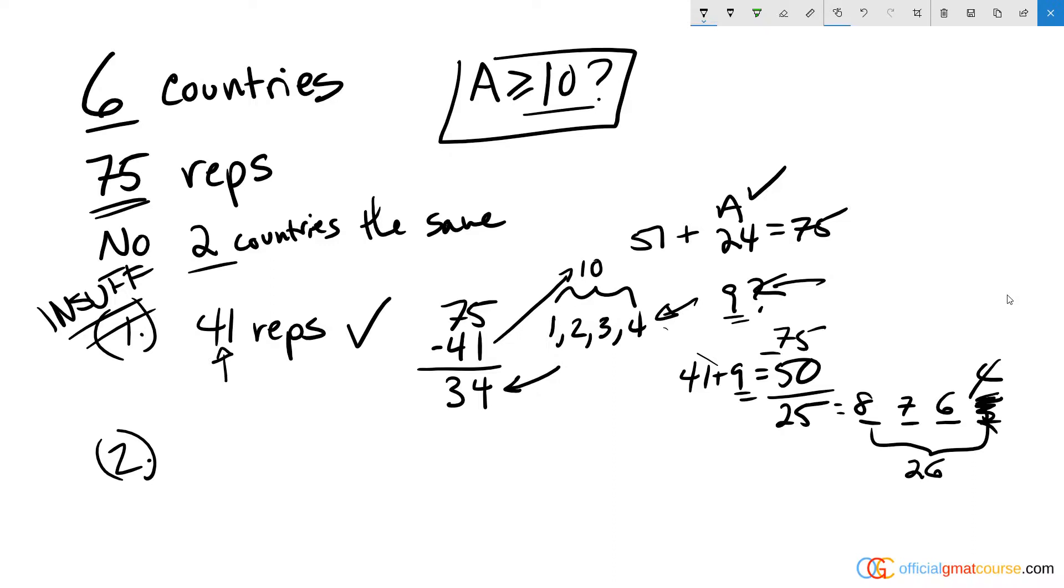Statement two said A sent fewer than 12 representatives to Congress. Well, I don't think that based on the logic we have in our first statement, and obviously we can't use the information from the first statement, but based on the logic, we saw we could make A equal nine. So we already know that we can get a no answer to the question of did A send at least 10 reps. Now, can we get a yes answer?